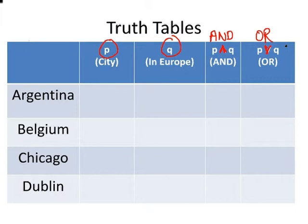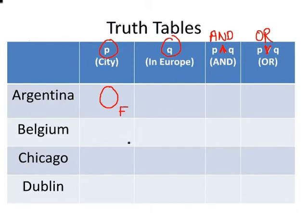Now let's look at our four places — four very well-known places. We're going to determine whether or not each place is a city. Argentina is not a city, so I'm going to put zero here. I'm using zero and one to represent false and true, though F and T are also valid. Belgium is not a city — zero. Chicago is a city — that is true, so I put a one there. And Dublin is also a city, so a one there.